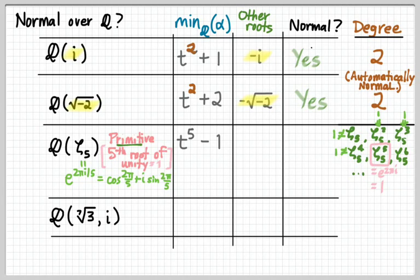So when we extend the rationals by the primitive fifth root of unity zeta 5, our instinct is to say that the simplest polynomial we can think of whose root is zeta 5 is t to the fifth minus 1. That's the most obvious choice.